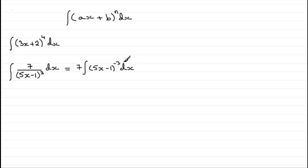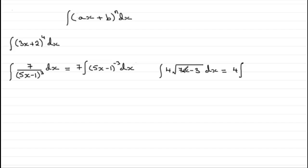Here n is minus 3, a is 5, and b is minus 1. Not only do we have types like this, but we can also integrate root functions or cube root functions. The 4 can be brought out the front of the integral as a constant, and we can think of the square root of 7x minus 3 as 7x minus 3 all to the power of a half, integrated with respect to x. So n is a rational number, not equal to minus 1, and we have the form ax plus b where a is 7 and b is minus 3.